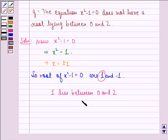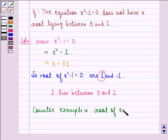The counter example is the root of equation equals to 1. So, the counter example is root of equation equal to 1 which lies between 0 and 2, for which the statement Q is not true.